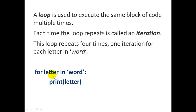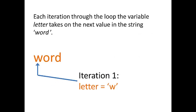Now you have to understand that in this loop, this letter here is a variable. And what it's going to do is print the variable each time through the loop. So the output you're going to get from this loop is WORD. So each iteration through this loop, the variable letter takes on the next value in the string word.